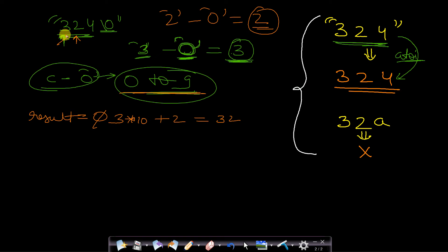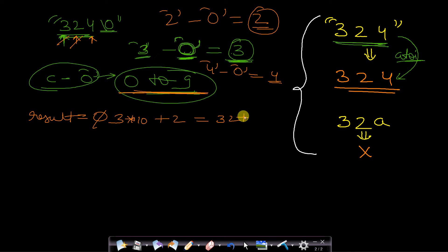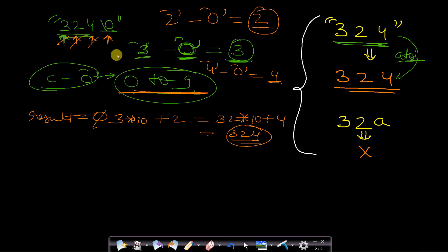Moving to the next character '4', similarly character '4' minus '0' equals 4, which falls in the range 0 to 9. So we do result times 10 plus 4, which equals 324. We then reach the end of the string and the loop ends. The number we got is 324 — this is the integral representation. This is how you implement atoi.